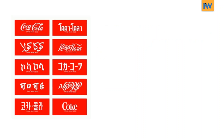Here's the Coca-Cola logo in several different languages. Even though the alphabets and letter forms are completely different, you can still see the consistency. The consistency exists in the red color, but also in the type forms themselves.